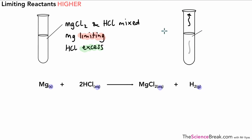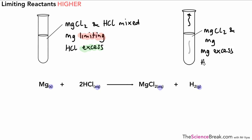In our second scenario it's slightly different. In this case we have leftover at the end magnesium chloride and, as you can see, some magnesium. We have no hydrochloric acid left because it's all been used up in the reaction. Therefore it's the magnesium this time that was in excess and the hydrochloric acid that was limiting — we know this because the magnesium is still left over.